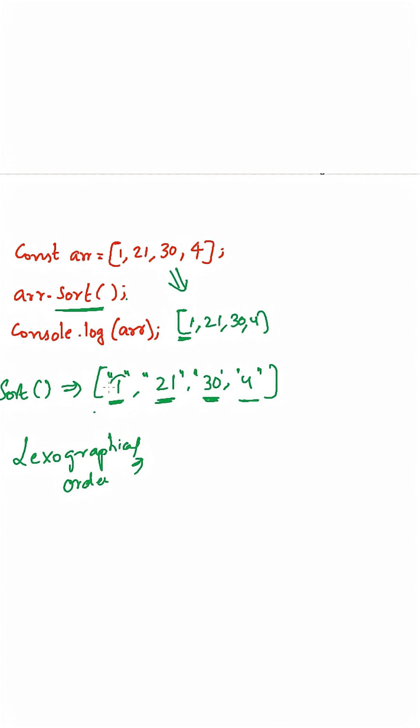Since '1' is less than '2', '2' is less than '3', and '3' is less than '4', the array will be sorted accordingly. Therefore, [1, 21, 30, 4] will be the output.